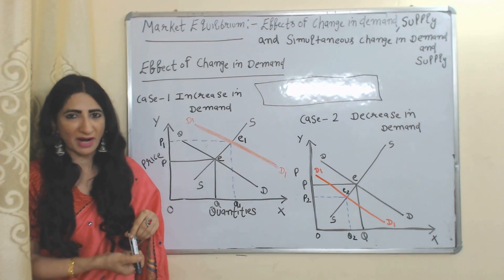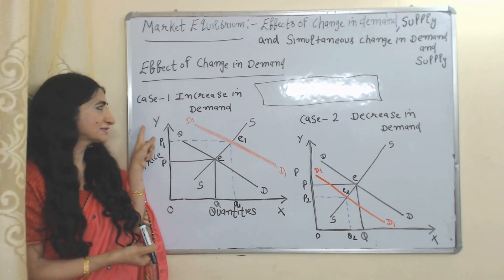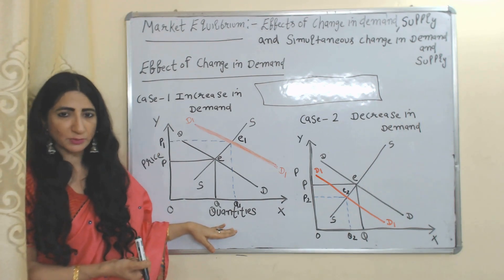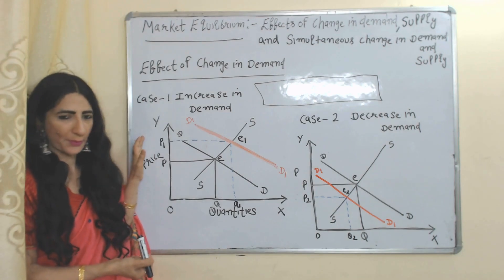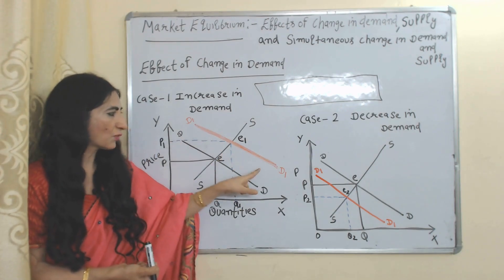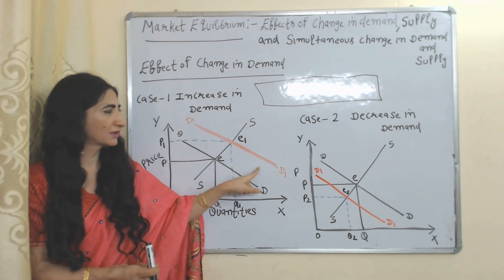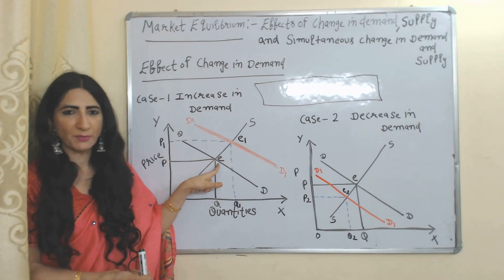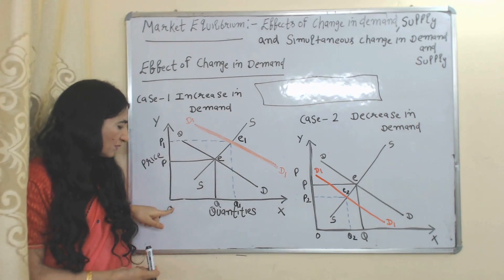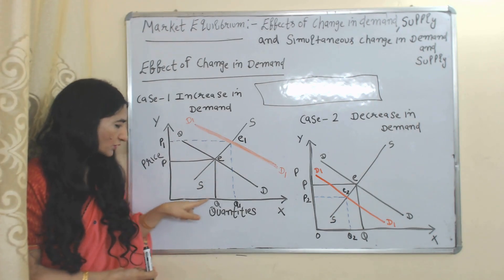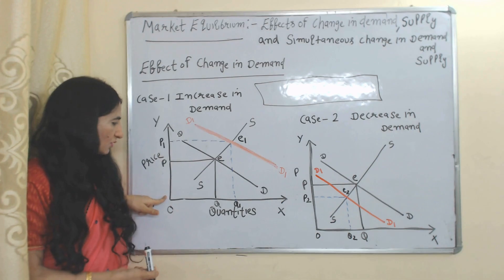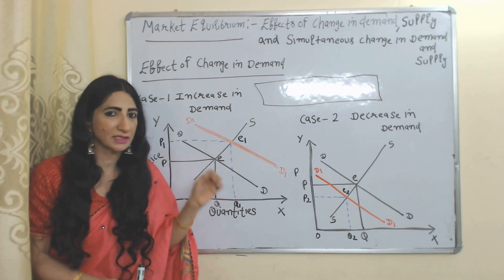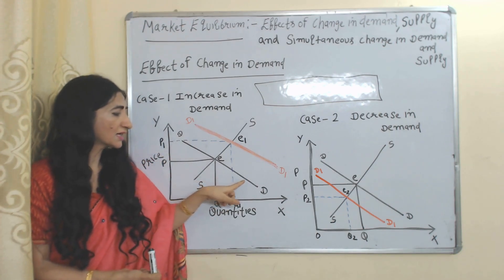First of all, we are going to talk about the effect of a change in demand. Our first case is increase in demand. In this diagram, on the x-axis we have quantities, on the y-axis we have price. DD and DD1 are demand curves, SS is the supply curve. Our initial equilibrium point is E, equilibrium quantity is OQ, and equilibrium price is OP. Now suppose supply is constant and only demand increases.